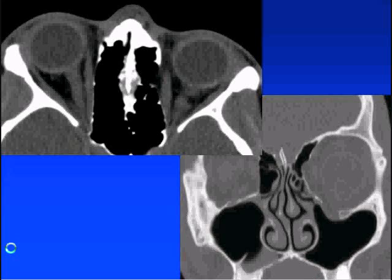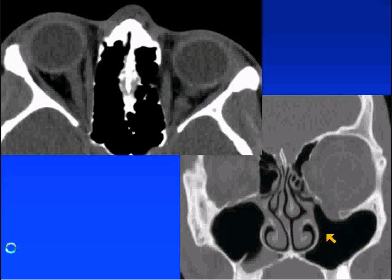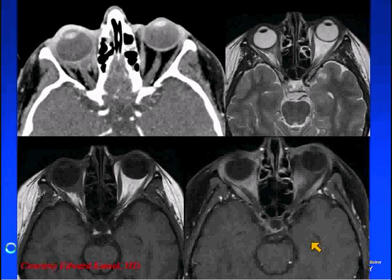This is another patient with enophthalmos. When we look at our soft tissue windows, the key is looking at our bony windows from the coronal image where we can see a defect within the orbital floor. This is enophthalmos secondary to an orbital floor fracture.